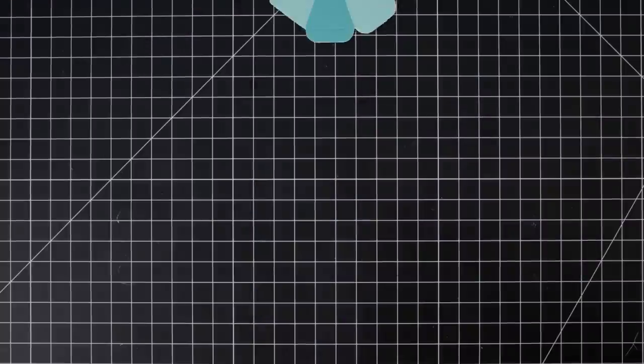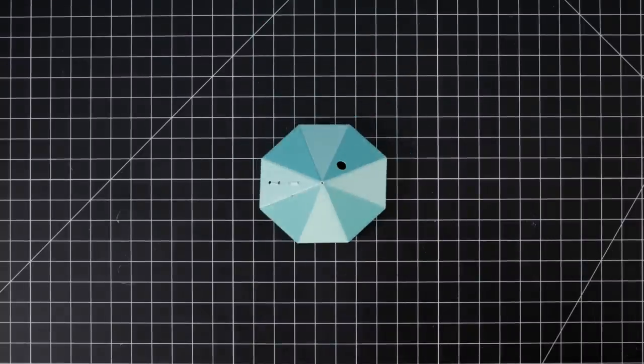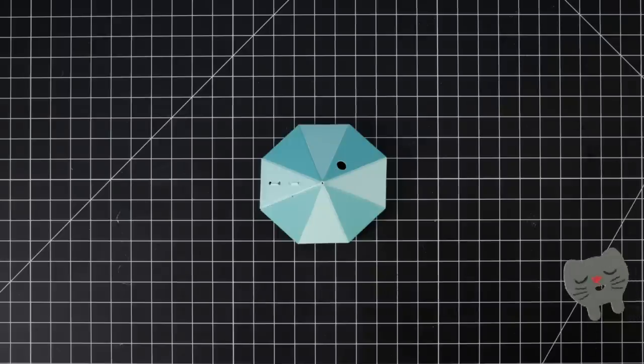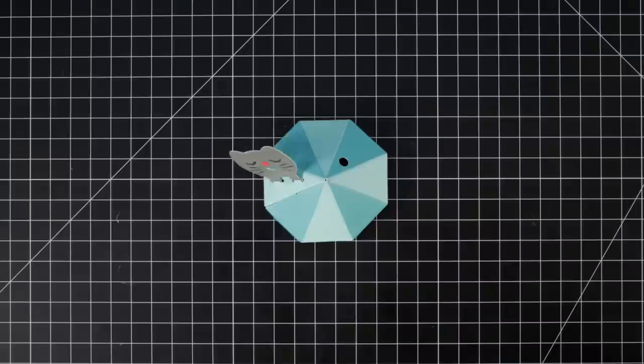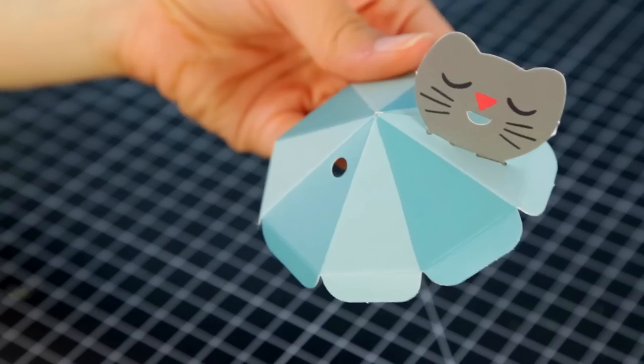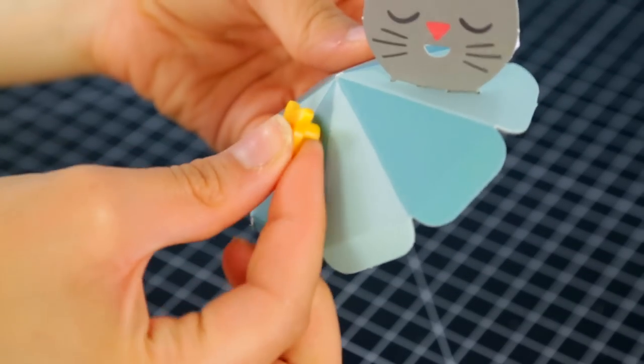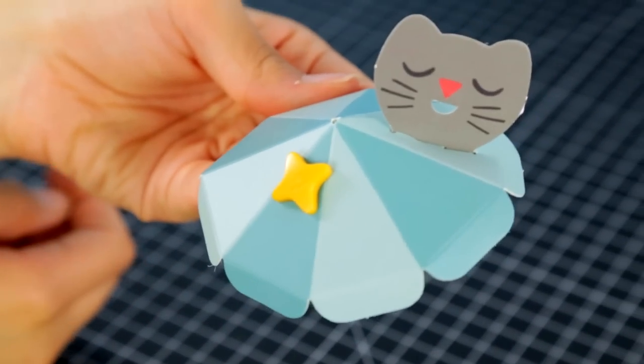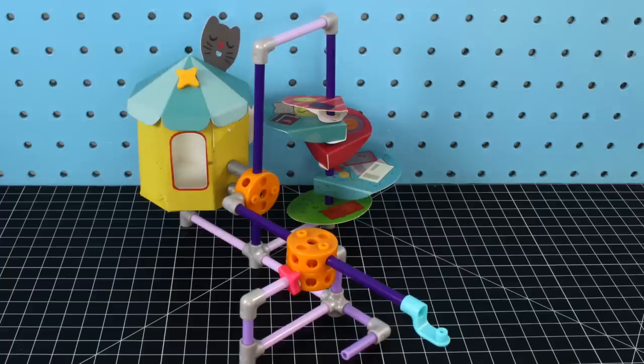Step 7. Fold together the roof and tuck in the tabs. Overlap the slits and put the giant cat sign through them. Now add the star stopper to the top. Finally add the roof to the hideout.